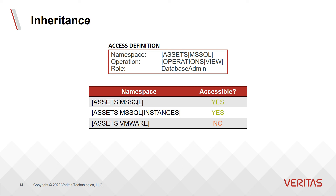It also gives an administrator the power to configure access at the level of granularity that works best for them. Access configured on higher level namespaces grants a wider range of access, while access configured on lower level namespaces grants a narrower scope of access.